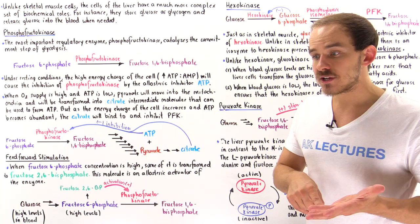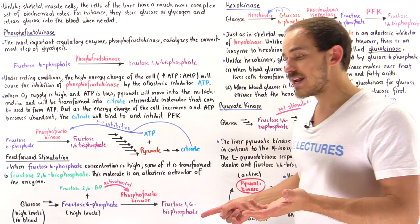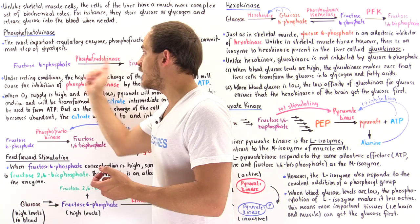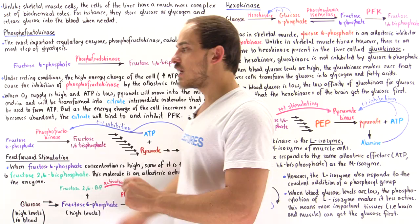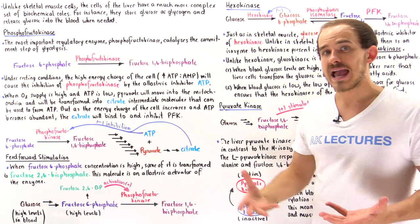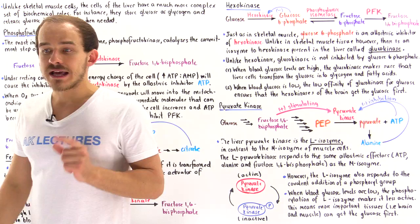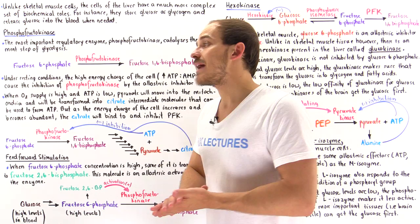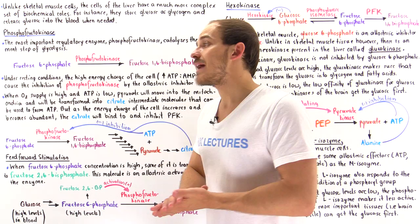Difference number one: in skeletal muscle cells, pH affects the activity of phosphofructokinase. A low pH or very acidic environment inhibits phosphofructokinase in skeletal muscle cells because during exercise there can be a buildup of lactic acid. But in liver cells, there is usually no buildup of lactic acid — partly because liver cells are actually responsible for breaking down that lactic acid into glucose molecules. That's exactly why phosphofructokinase is not affected by pH in liver cells.